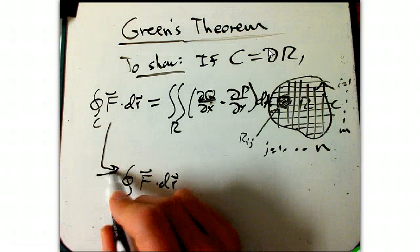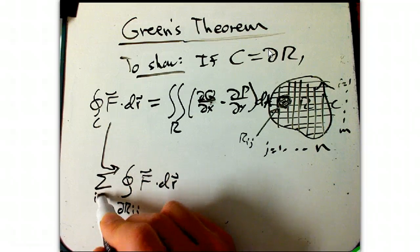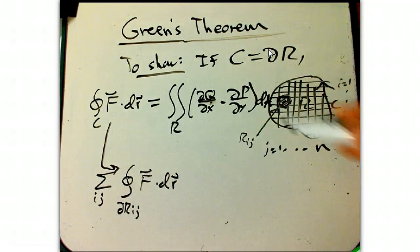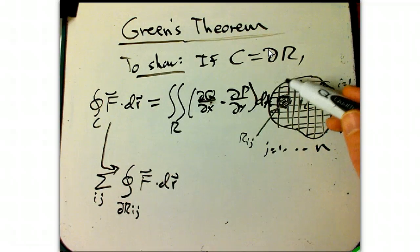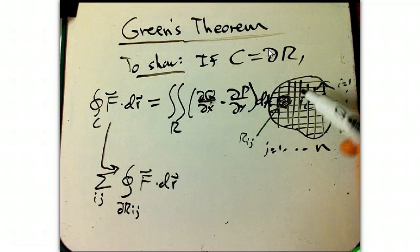And then what I'm going to do is I'm going to sum those all up over all the slots, i and j, the grid slots. So it's just taking all of these little tiny boxes and summing up the circulations on those. Now let's see what happens. Let's blow that up a little bit, just a few boxes next to each other.